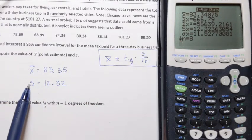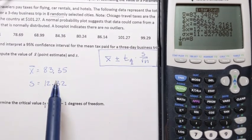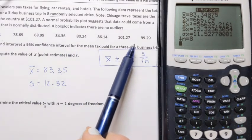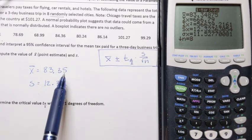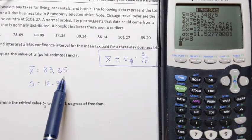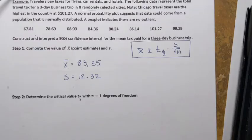From the calculator output, x̄ (sample mean) is 83.35 and sample standard deviation s is 12.32. So the average travel tax for a three-day business trip in those eight cities is $83.35. The population average is probably not exactly that, but somewhere close — we'll use the sample mean to estimate population mean.